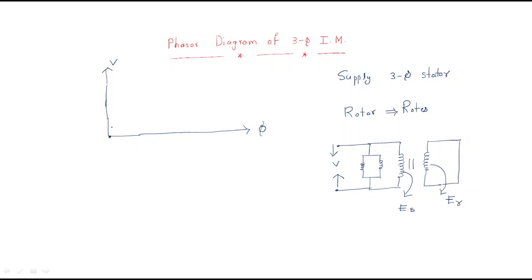First, we give the supply voltage V in this position. The supply voltage always produces the flux with 90 degrees lag. This flux produces the magnetizing current IMU in the flux direction. This current enters the no-load branch as IMU. We also have the core loss component IC, and their combination gives us the no-load current I-naught.